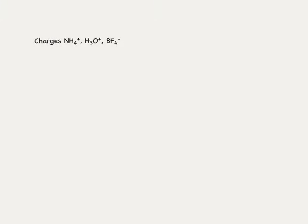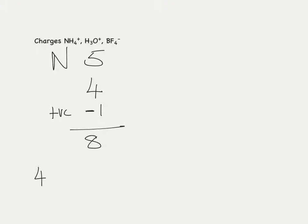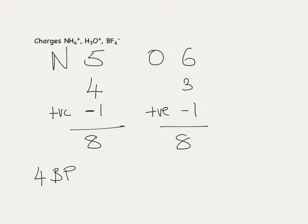Let's look at some charged examples. First, NH4+: nitrogen has five electrons in the outer shell, four hydrogen bonds, and because we've got a positive charge, we take one away from our total electron count, giving us eight electrons and four bond pairs. H3O+: oxygen has six electrons in its outer shell, three bonds to hydrogen, and a positive charge means we take one electron away, giving us eight electrons — four pairs — so three bond pairs and one lone pair.